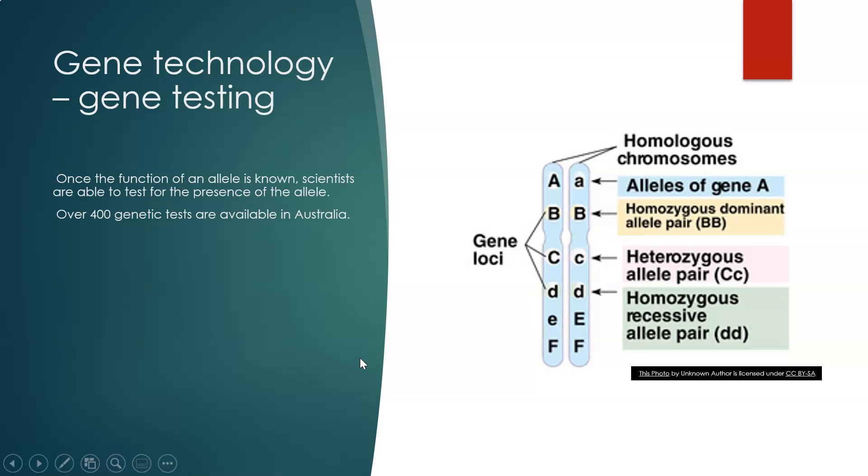Today in Australia, there are over 400 genetic tests available. Knowledge of your genetic makeup could help avoid diseases by lifestyle as well as genetics, for example, type 2 diabetes.